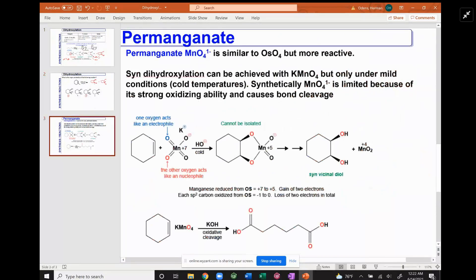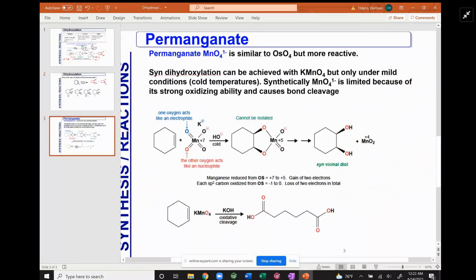So permanganate is similar to osmium tetroxide. Here you're using potassium permanganate in the presence of sodium hydroxide or potassium hydroxide, but the reaction has to be cold. Again, the double bond alkene attacks, that's the nucleophile, and this electron flow from this oxygen attacks the other alkene carbon to form this intermediate, which is manganese 5. It went from manganese +7 to manganese +5, which then sodium hydroxide will break these two bonds to form the syn vicinal diol.